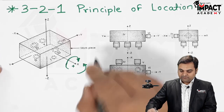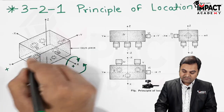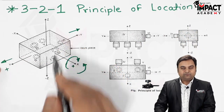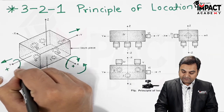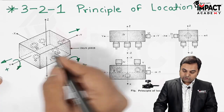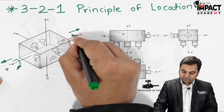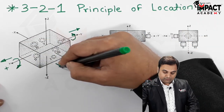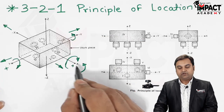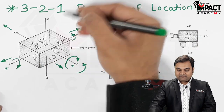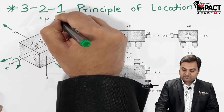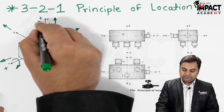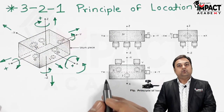Similarly, along the y direction we have translation along positive y and negative y — 2 degrees of freedom — and while looking from the positive y direction the object can rotate clockwise and anti-clockwise, giving 4 degrees of freedom along y. The same applies for the z direction: translation along positive z, negative z, and clockwise and anti-clockwise rotation when looking from the positive z direction.